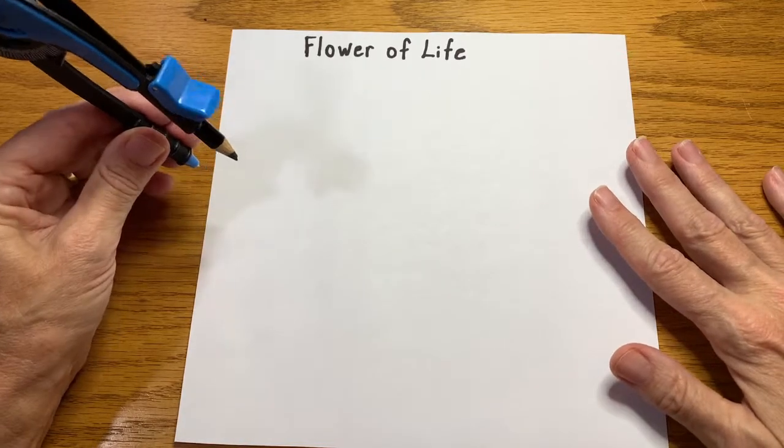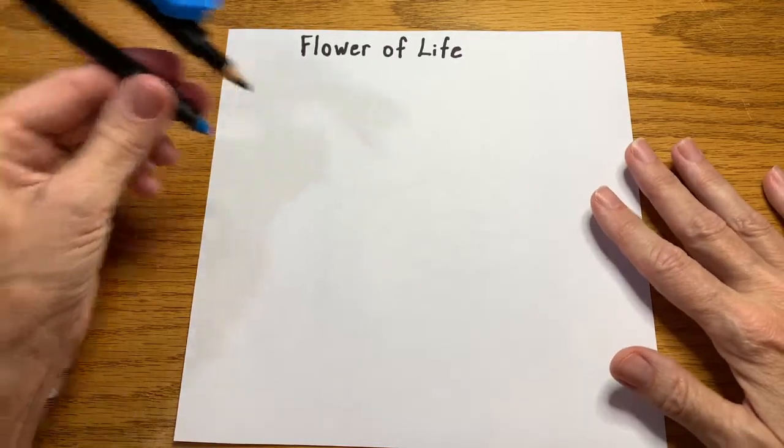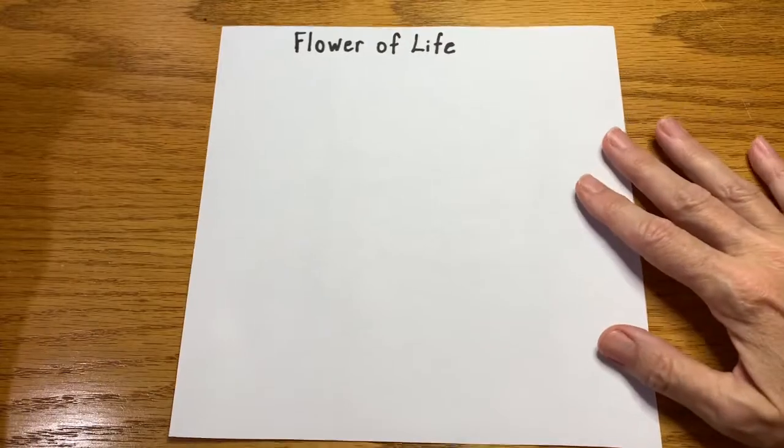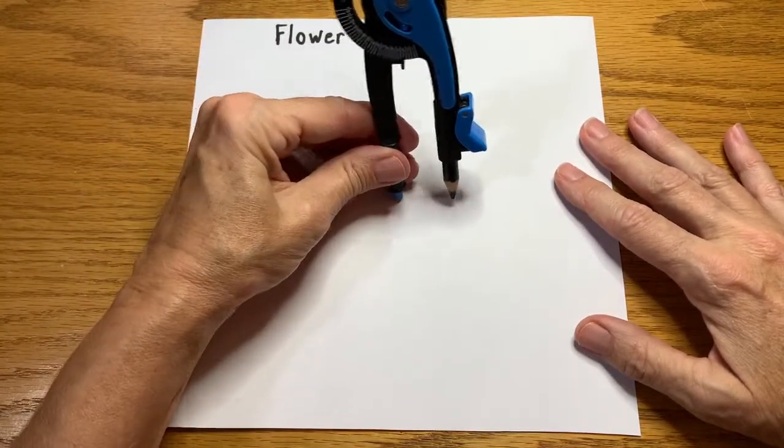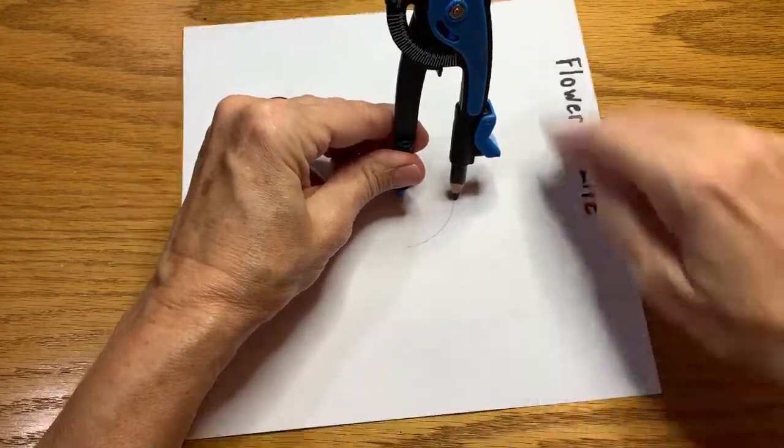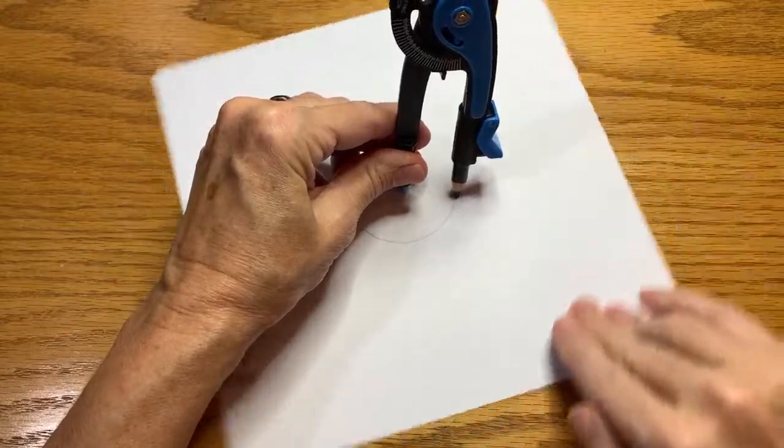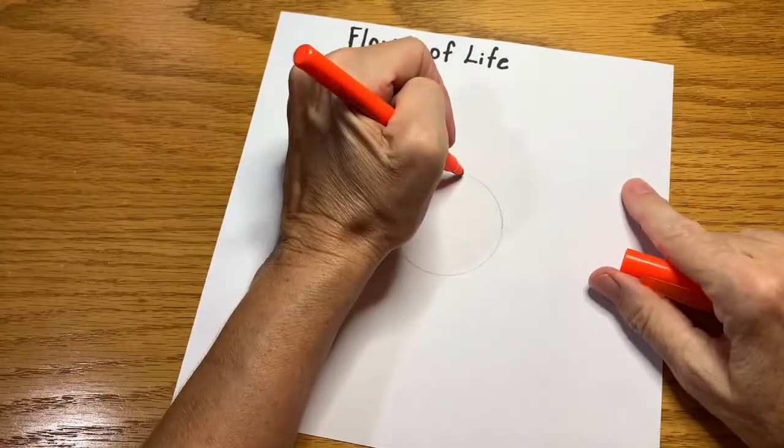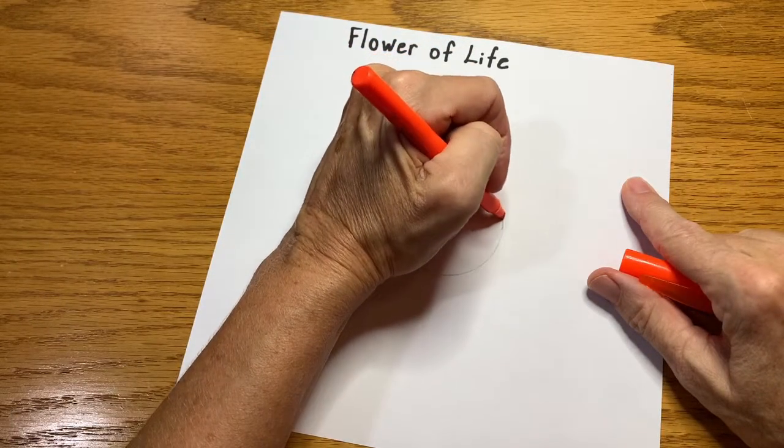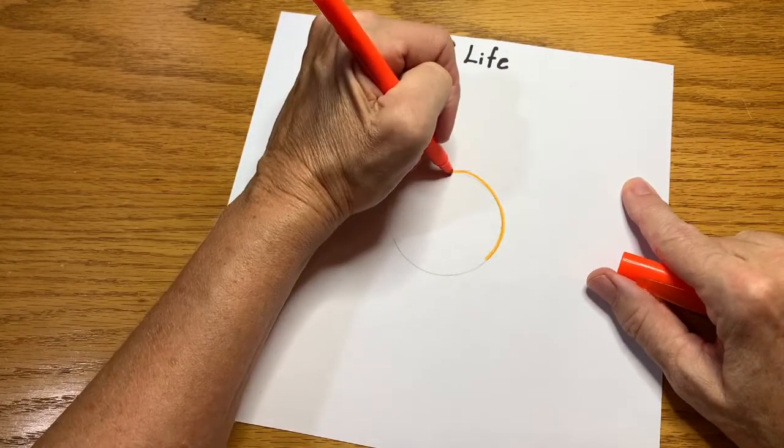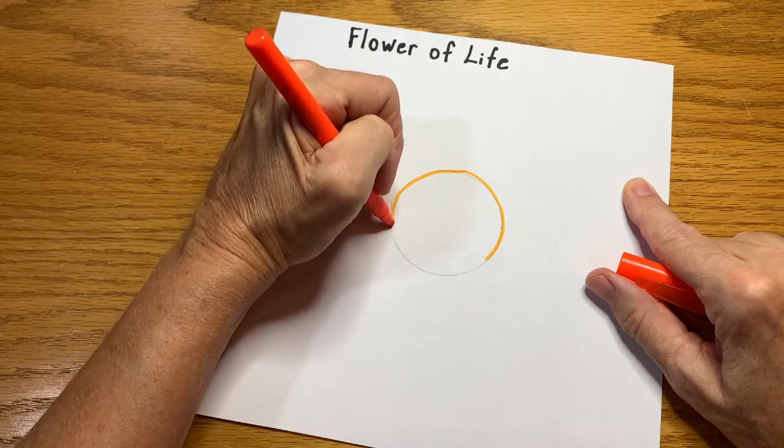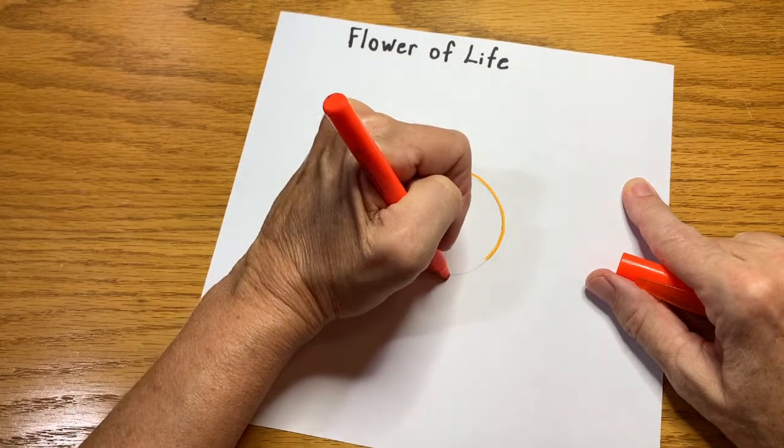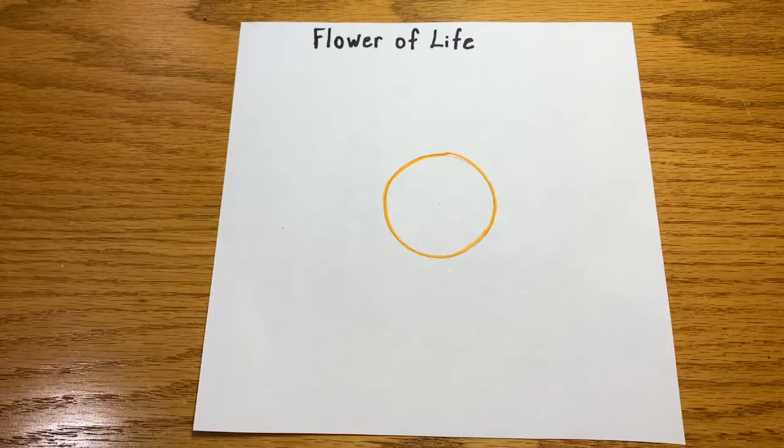You will start with your compass in the middle of the paper. So we're going to put the compass in the paper and make our first circle. I am going to outline this circle so we can see it a little better because it's important to know where the starting circle was. And I'll show you why here in a minute. So there's our starting circle.